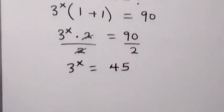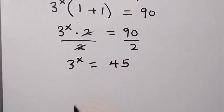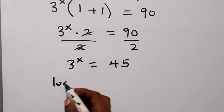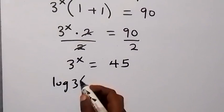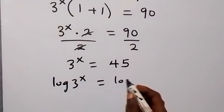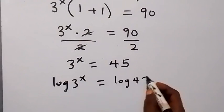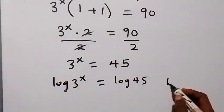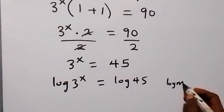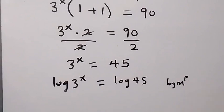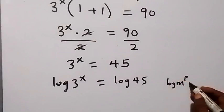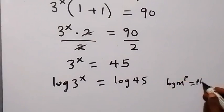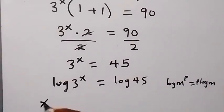We take the log on both sides. We have log of 3 raised to the power x equals log 45. Using the power rule of logarithms — log of m raised to power b equals b times log m — this becomes x log 3 equals log 45.